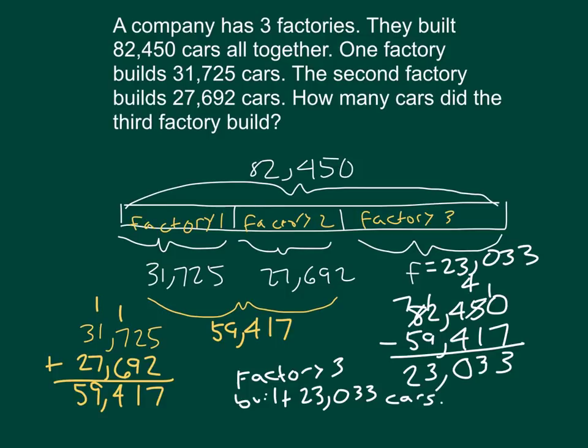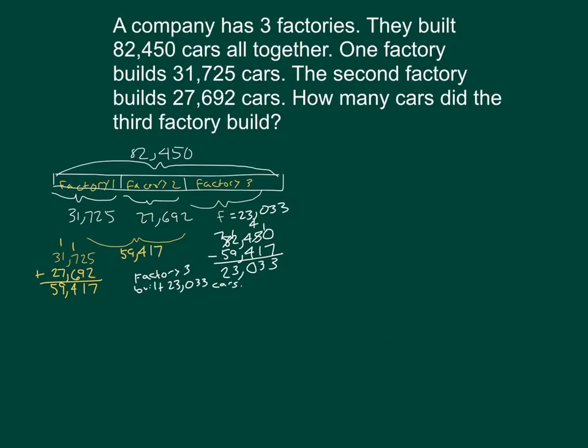I do have to use some rounding to check my answer. So, first off, I shrunk my original work, and then I will go ahead and figure out for factory one and factory two, my rounded numbers are as follows. Let's see. 31,725 to the nearest thousand would be 32,000. For factory two, I would have had 27,692 rounded to the nearest thousand place as what? 28,000.